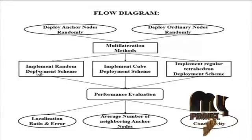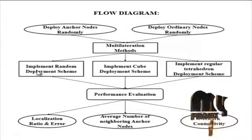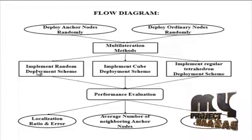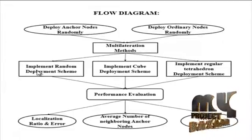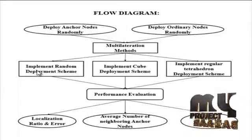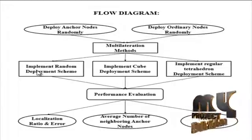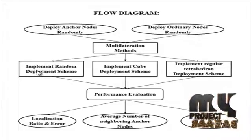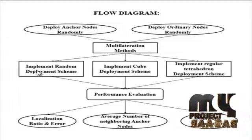In the random deployment scheme, anchor nodes are deployed randomly in a three-dimensional monitored region. Ordinary nodes in all three deployment schemes are also deployed randomly in the three-dimensional monitored space. If no prior knowledge of the monitored region is available, or if deterministic deployment of sensors is very risky or infeasible, random deployment often becomes the only option.